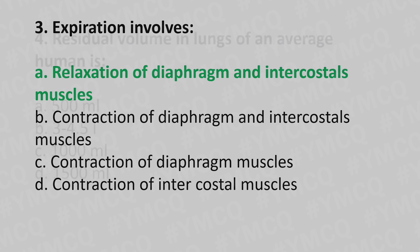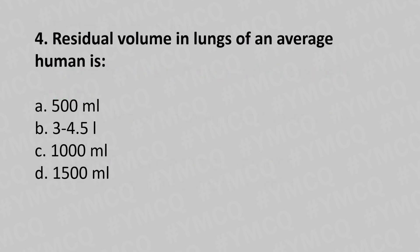Now let's move to question number four. Tidal volume in lungs of an average human is: option a, 500 ml; option b, 3 to 4.5 liters; option c, 1000 ml; option d, 1500 ml. And the answer is option d, 1500 ml.